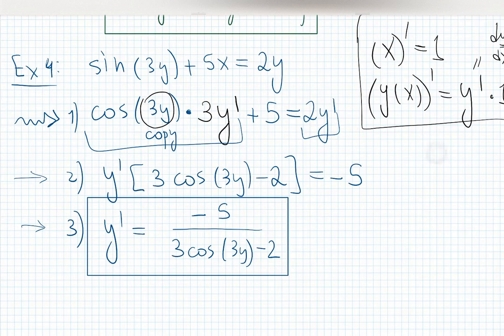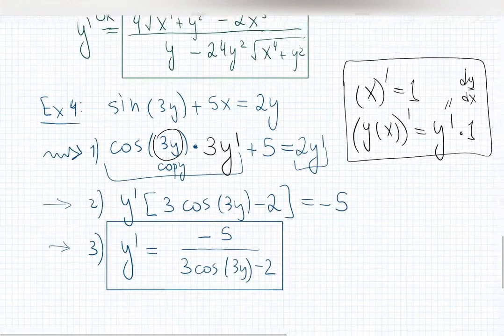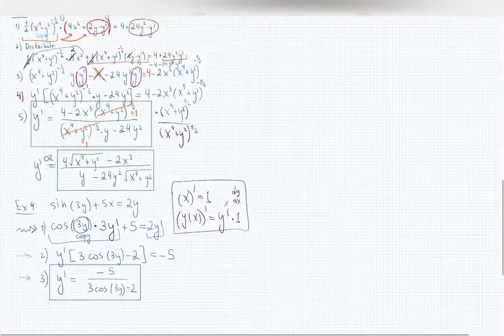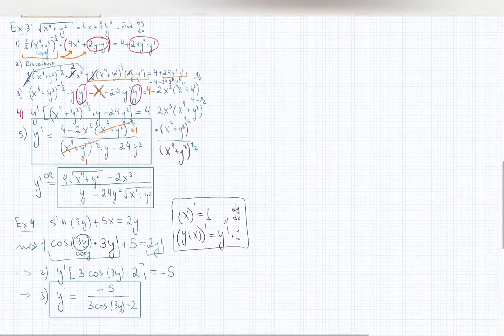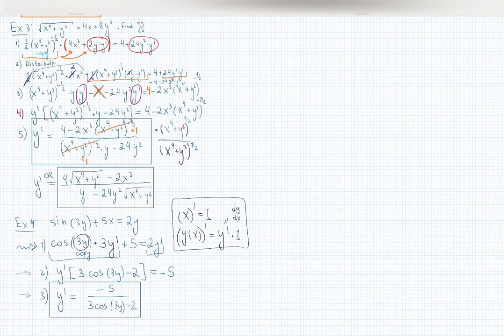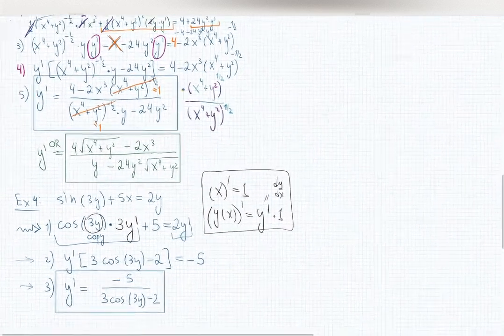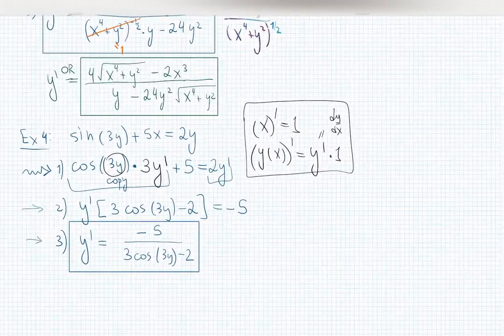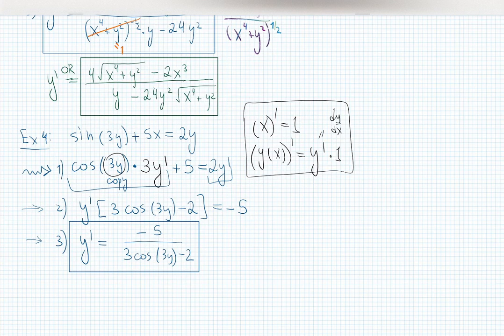That's the last thing I'll show you in implicit differentiation — then your job is to work on homework. The problem is: you see me doing it and it looks okay, but then you do it yourself. So work many times with notes closed — repeat until you catch all the mistakes: product rule, x times y gives y prime, x gives 1, quotient rule, and so on.